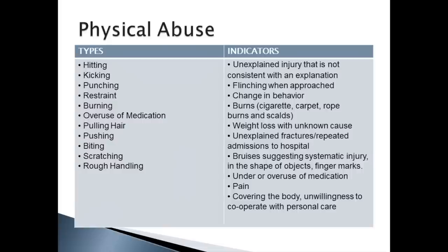Further indicators of physical abuse include weight loss without apparent cause, unexplained fractures, repeated admissions to hospital, bruises that suggest systematic injury — usually in the shape of objects or finger marks — under or overuse of medication, people being in pain, people who cover their body, and unwillingness to cooperate with personal care.